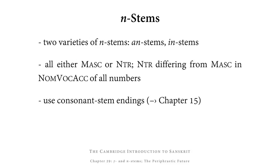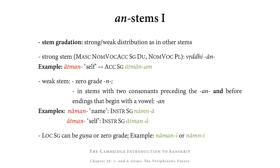Next up, N-stems. There are two formal varieties: AN-stems and IN-stems, ending in -an and -in respectively. All N-stems are either masculine or neuter — the feminine is formed slightly differently, as we'll see shortly. The neuter N-stems differ from their masculine counterparts only in the nominative, vocative, and accusative of all numbers; from the instrumental onward they are formally identical to the masculine. All of these use consonant stem endings introduced in chapter 15, so there are no new endings to memorize.